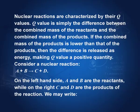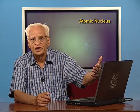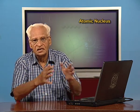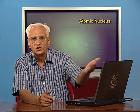Nuclear reactions are characterized by their Q values. The Q value is simply the energy released in the process — the difference between the combined mass of the reactants and the combined mass of the products, multiplied by c squared. In a reaction A + B → C + D, these are the reactants and these are the products, and the difference in mass multiplied by c squared gives the Q value.